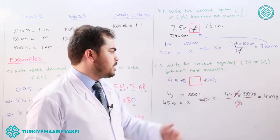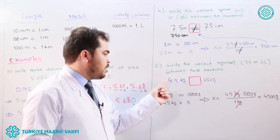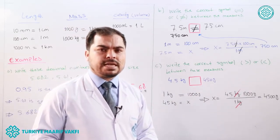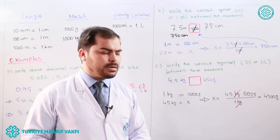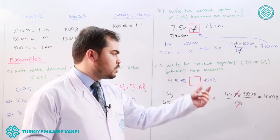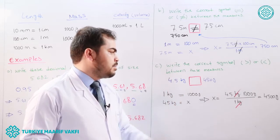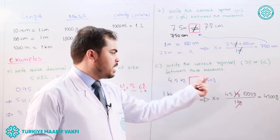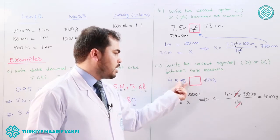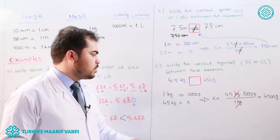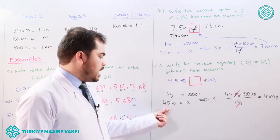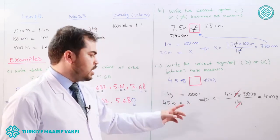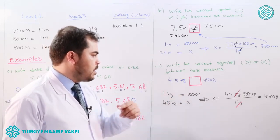Part C asks us to write the correct symbol — greater than or less than — between 4.5 kilograms and 450 grams. These are not in the same unit, so we must convert. One kilogram equals one thousand grams, so we set up a proportion: 4.5 kilograms equals x grams.